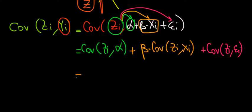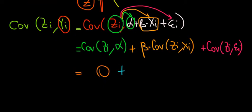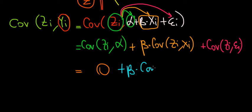The covariance between the instrumental variable and a constant is zero, since the constant does not vary — whenever we have covariance between any term and a constant, that covariance is zero. Now, here we actually have a certain covariance, because the instrumental variable z has an effect on x. So there is covariance between them: when z moves, x moves. So we keep beta times the covariance of z and x.